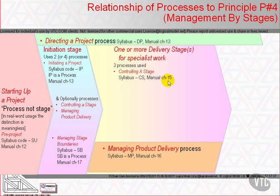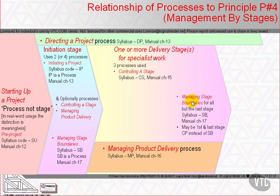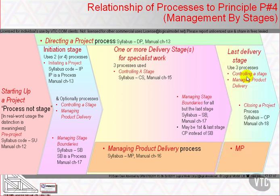At the end of a delivery stage, we either close the stage using Managing Stage Boundaries — used for all but the last stage — or, if the first delivery stage is also the last, we use Managing Stage Boundaries once at the end of the initiation stage to enter that delivery stage, which then uses Closing a Project to close it down. There is much detail still to add to complete this picture.